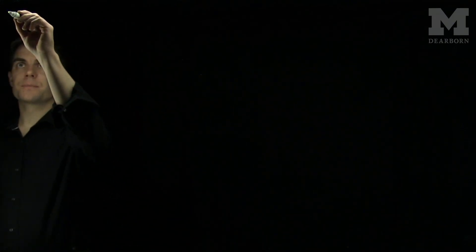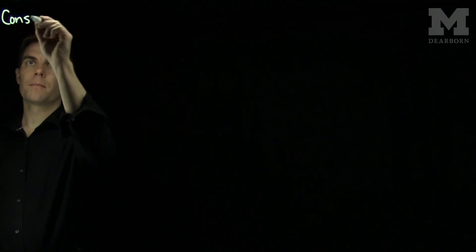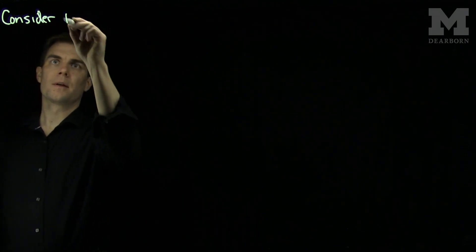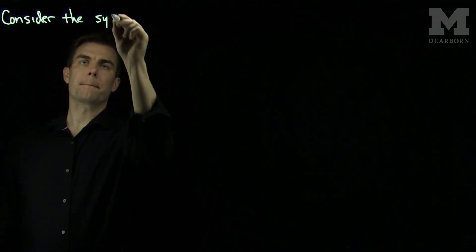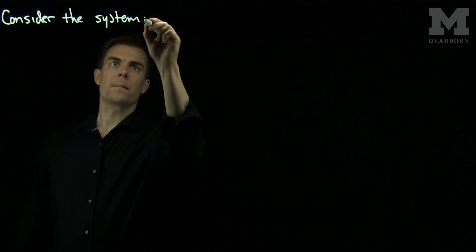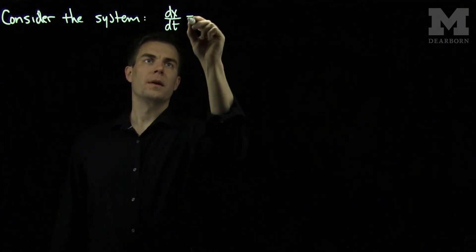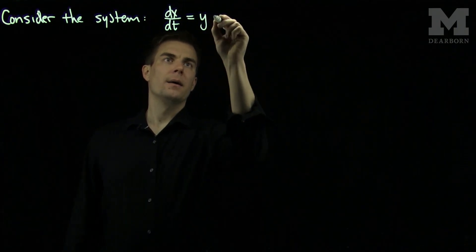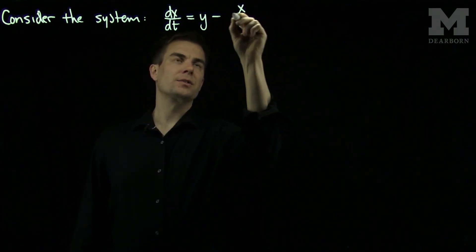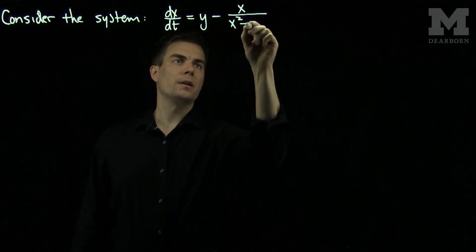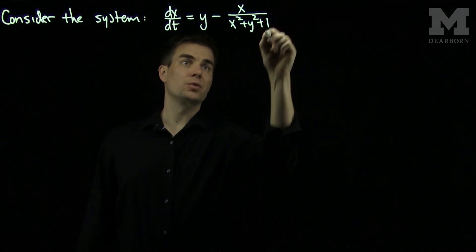So let's see an example of this. Let's consider the system dx/dt = y - x/(x² + y² + 1).